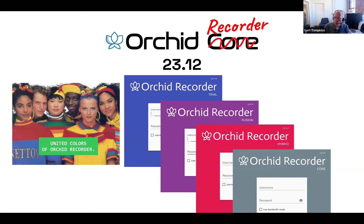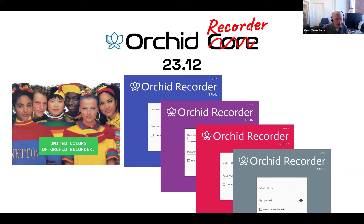It's got two pieces: a management portal, and some recorder software. We want those all to be part of the same software. So if you've got Orchid Fusion installed as your head end, you will have a purple Orchid Recorder Fusion edition at each one of your locations. If you're using Orchid Hybrid as your head end, you will have this red-pink Orchid Recorder Hybrid edition at all of your NVR locations.